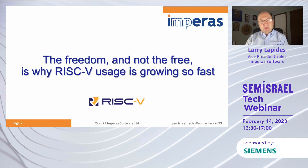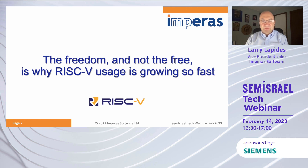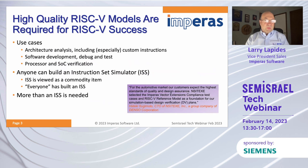Just as a reminder about RISC-V: RISC-V is an open architecture, and it's this freedom — not the free — which is why RISC-V usage is growing so fast. To use RISC-V, high-quality RISC-V models are required, and there are three use cases.